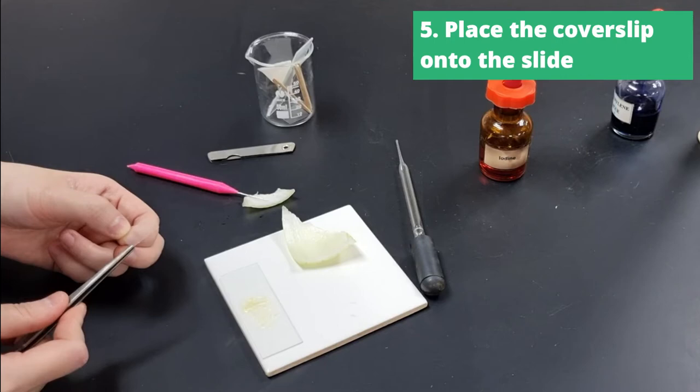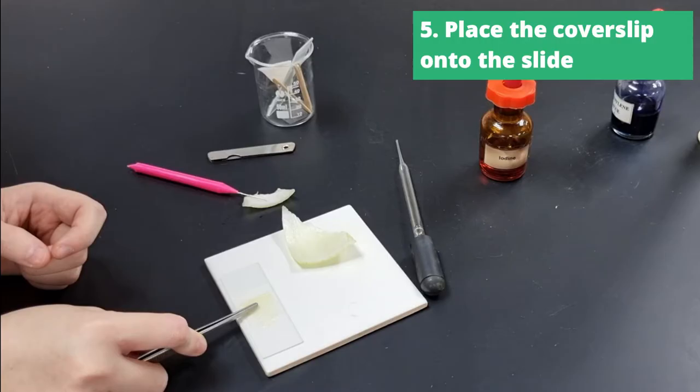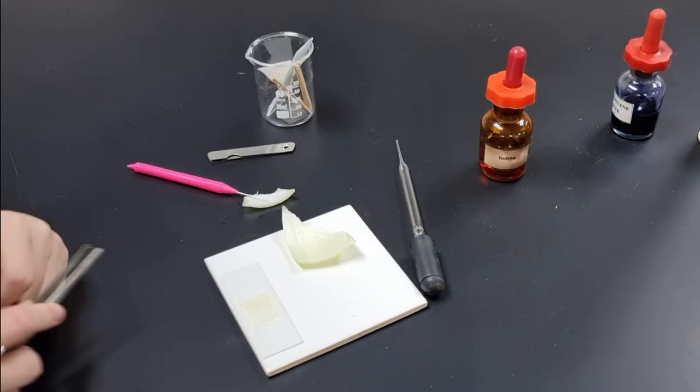Now we're going to take a cover slip, it's a square piece of plastic, and we're going to lay it down on top of the onion layer. Notice I lay it down on one side and then slowly lower it on the other side, and this actually helps to avoid any air bubbles.